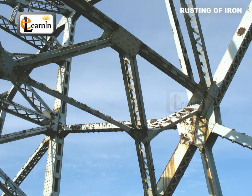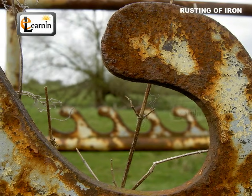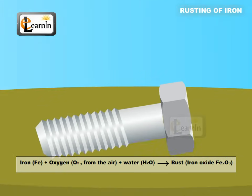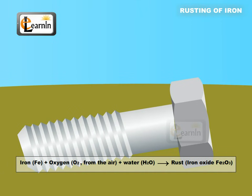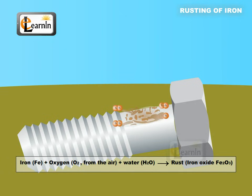Let's represent the process of rusting through this equation: iron plus oxygen plus water gives rise to rust. Rust is nothing but iron oxide.